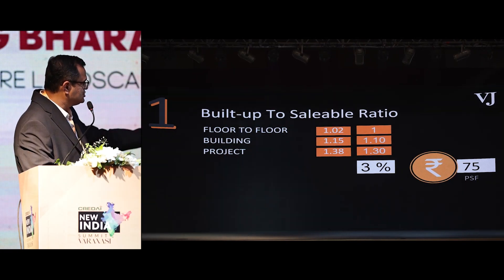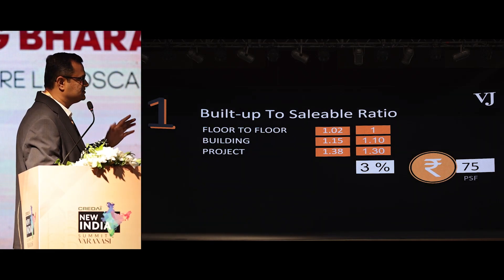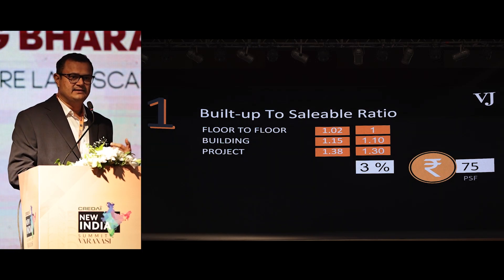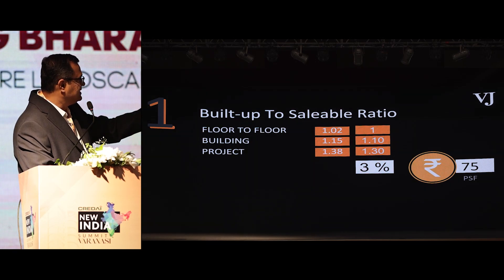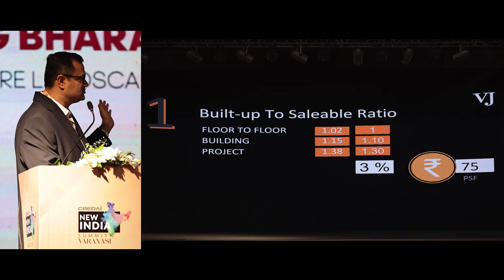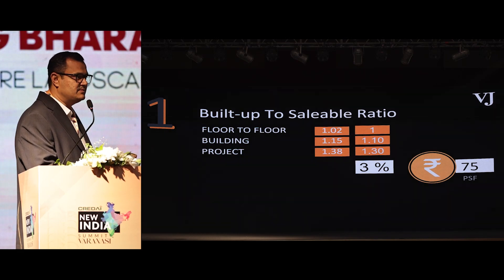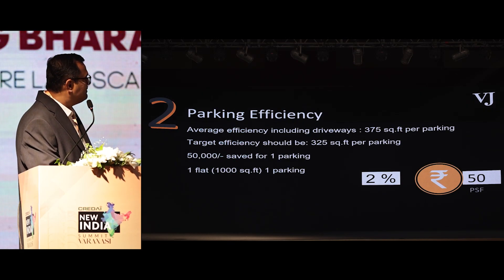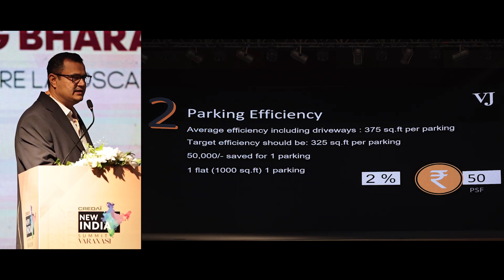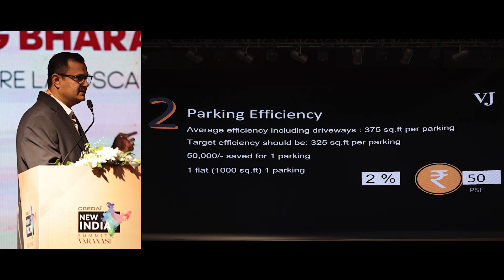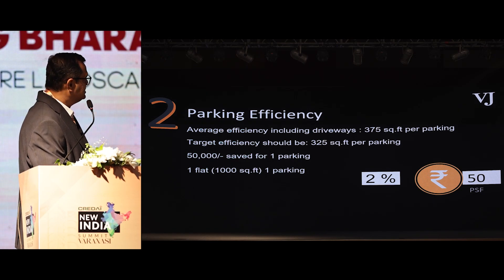The first point is the built-up to saleable ratio, which we must be looking at. For floor-to-floor building and project, I have shared the ratios here — feel free to take pictures, and I'll also be sharing the slides. If you're able to optimize these ratios along with your architect, the right-hand side shows your target and the left shows what you typically get. Getting these ratios in place at the time of initial design will help you be cost-efficient. Parking efficiency is also another criteria, as the plot geometry can be tricky, but it's important to pay attention to it.